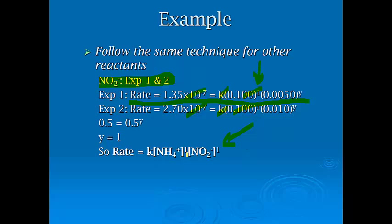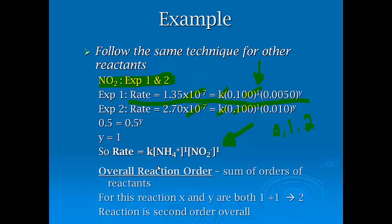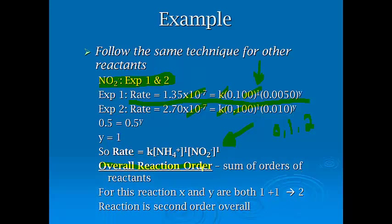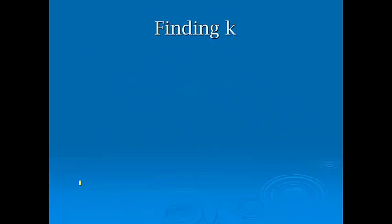So this is our rate law: rate is equal to lowercase k times ammonium to first order, nitrite first order. Most of the ones we're going to see are going to be 0, first, or second order. So you're not going to have to worry about knowing too many funky things on log rules. The overall reaction order, we just add them up. We simply sum up all the orders. So for this reaction, x and y are both 1, so we say the reaction is second order overall. Sometimes it corresponds to the coefficients, sometimes not. That's why we have to determine this rate law experimentally.